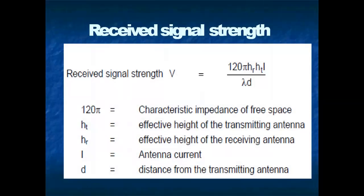Receiver signal strength: V = 120π × Hr × Ht × I / (λ × D), where 120π is the characteristic impedance of free space, Ht is the effective height of the transmitting antenna, Hr is the effective height of the receiving antenna, I is the antenna current, and D is the distance from the transmitting antenna.